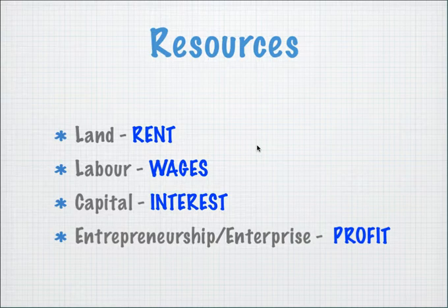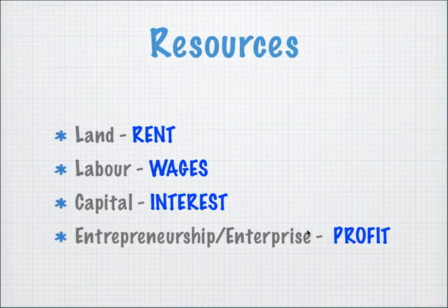What is land? Examples of land can be actual land or natural resources in general. Farmers can use this land to grow crops and sell them for a profit. These farmers pay rent to the landlord — the person who owns the resources receives rent. So we have rent, wages, interest, and profit — all of which are what the person who owns the resource receives for renting it out to a producer.